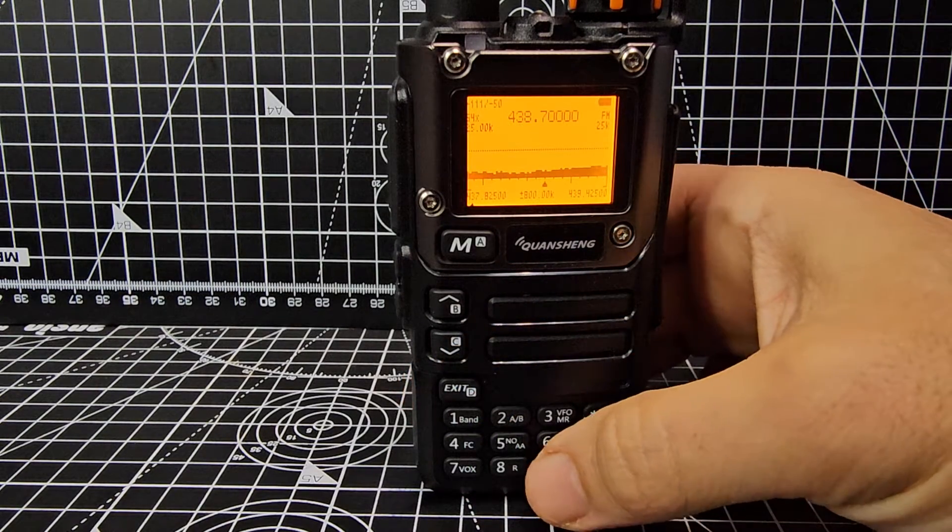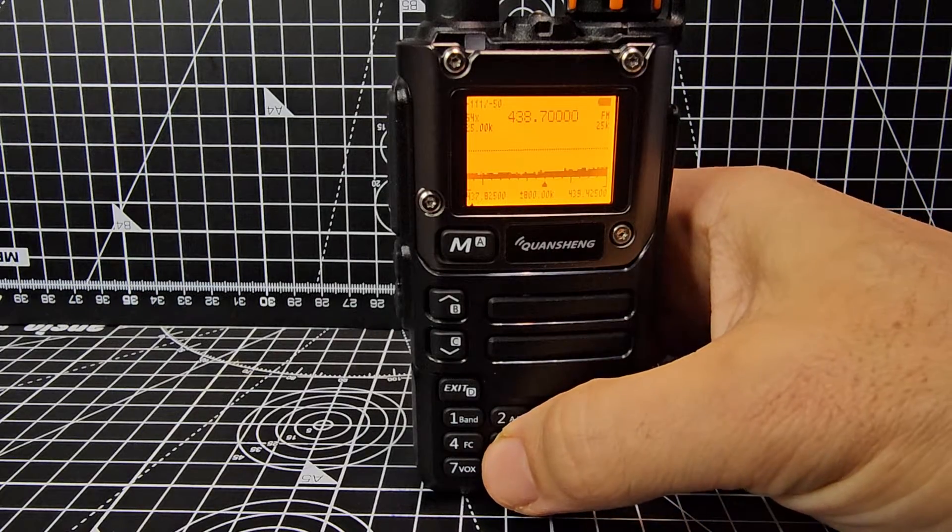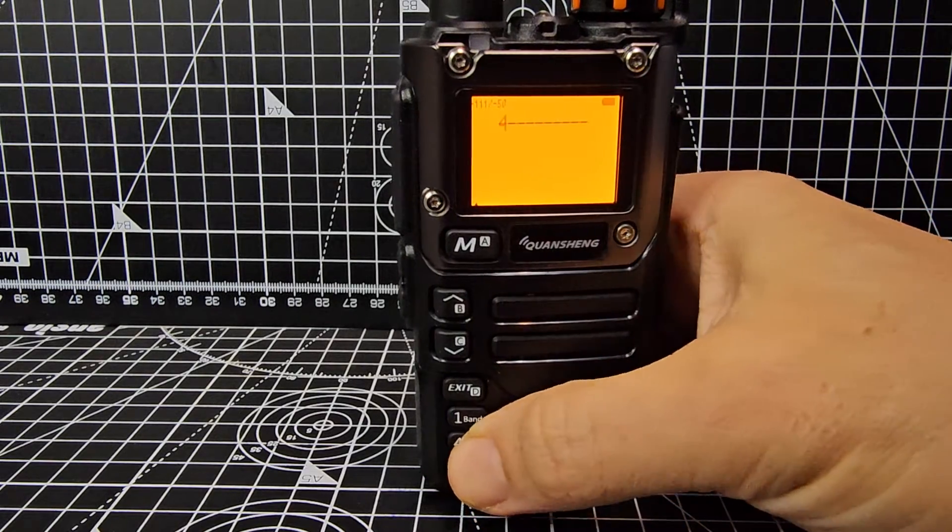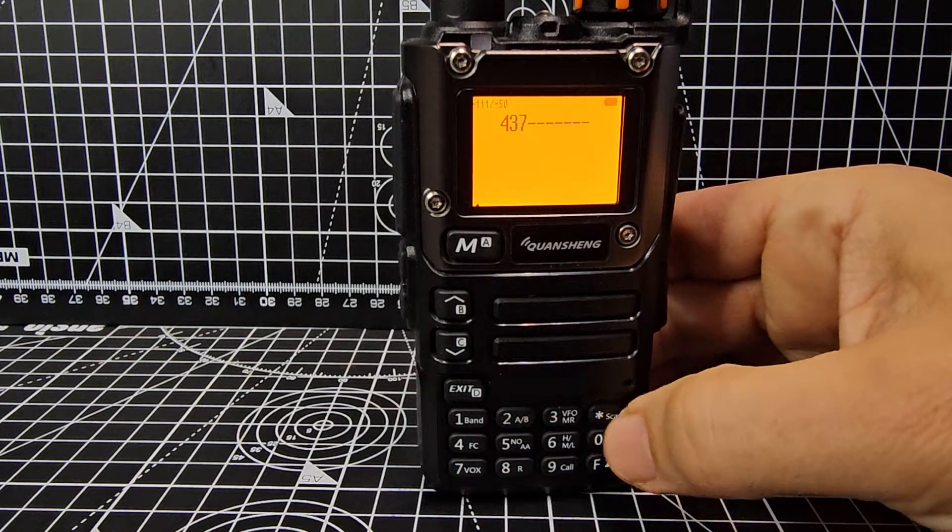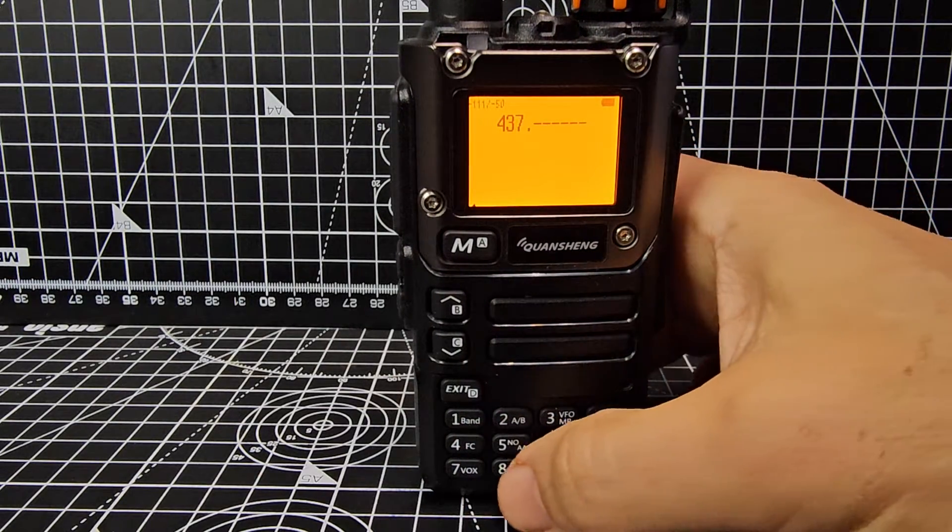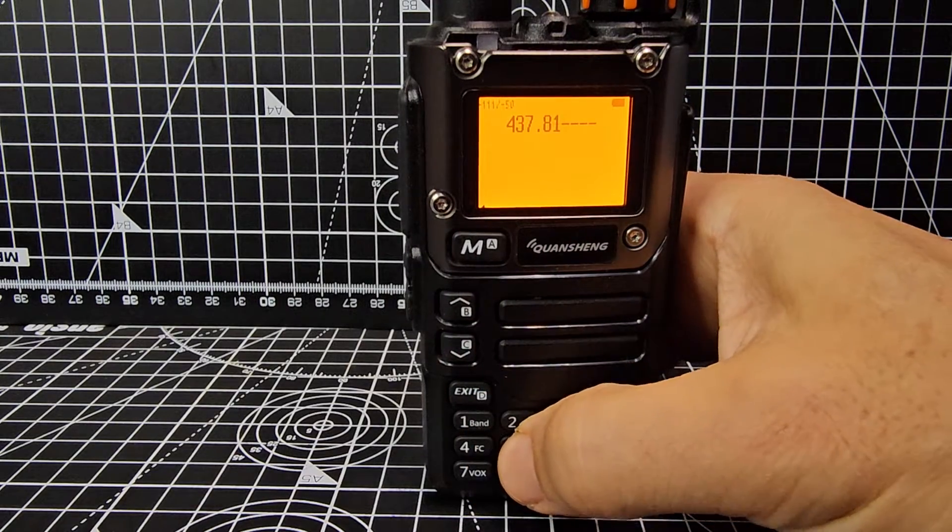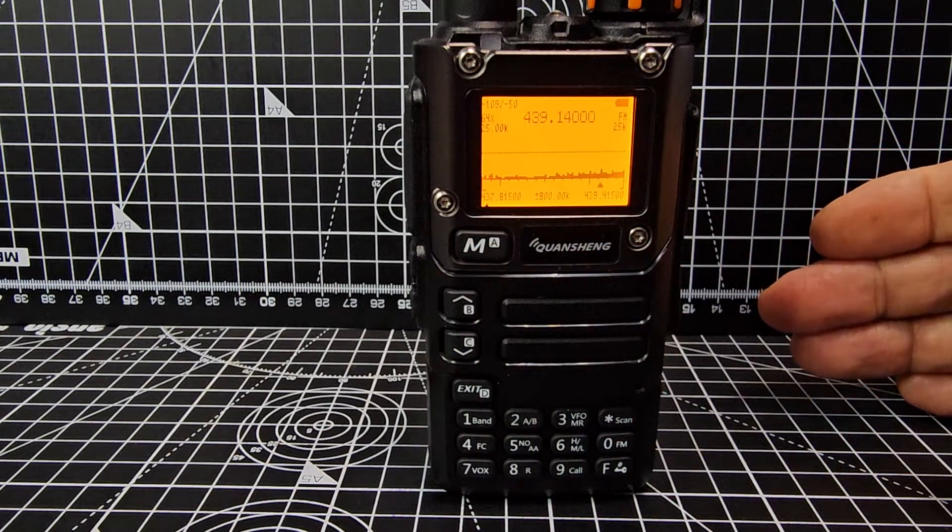So you just go... The way to enter an actual frequency is to go 5, 4, 3, 7, hit the star, then the rest, 8, 1, 5, and then M. So you're on the exact frequency.